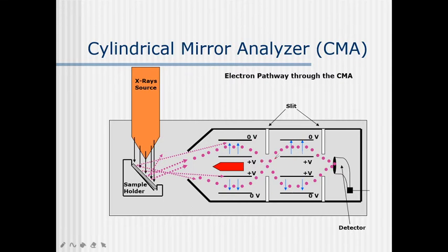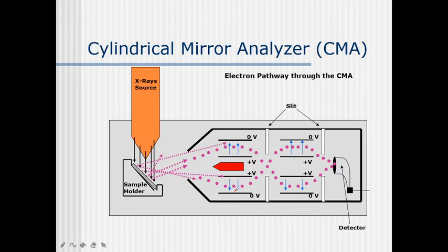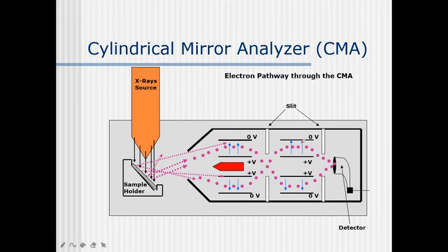The CMA has an outer cylinder and an inner cylinder; one voltage is positive and the other is zero. Once the X-ray source falls on the sample, many electrons are released, including auger electrons. Electrons with higher velocity hit the outer cylinder; those with lower velocity hit the inner cylinder. Only electrons with the right velocity move through the cylinders and through the slits, giving them the proper velocity and kinetic energy to reach the detector and produce the spectra.